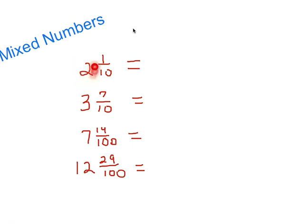We don't call it a large number — we actually call this our whole number, or the full pieces. Say we're talking about pizza: two would mean two full pizzas, and then the fraction means we'd have one out of ten pieces of the third pizza. So we don't have a full third pizza. Let's say we've eaten two and one-tenth pizzas — we were really hungry that day — so we ate two full pizzas and one out of ten pieces of the third.